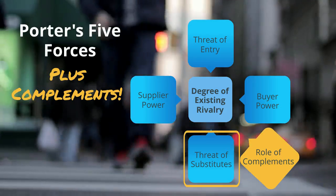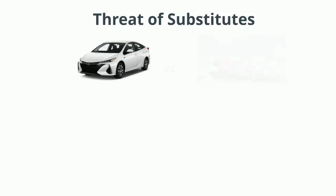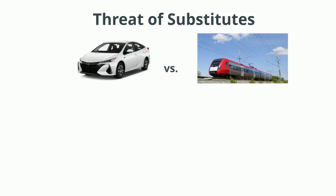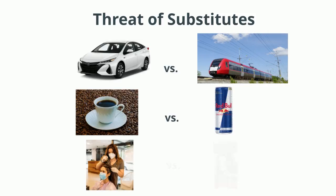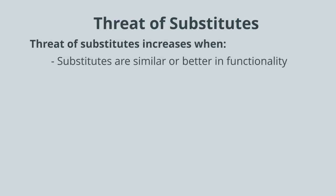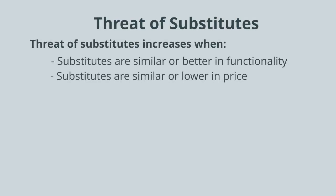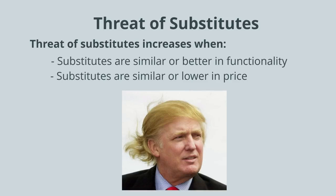Now let's analyze the threat of substitutes. Substitutes are things that aren't in your industry but serve a similar function for the customer — for example, cars versus trains for transportation, getting your caffeine from coffee or an energy drink, or getting your hair colored at a salon or using a boxed hair color. The threat of substitutes increases when substitutes are similar or better in functionality and when they're similar or lower in price. For example, boxed hair color might be lower in price and more convenient, though the outcome might be a little riskier.